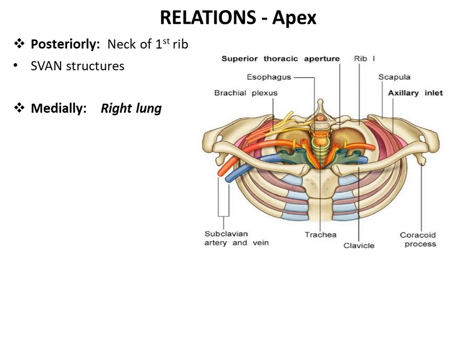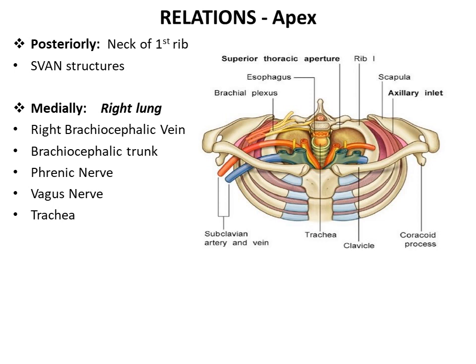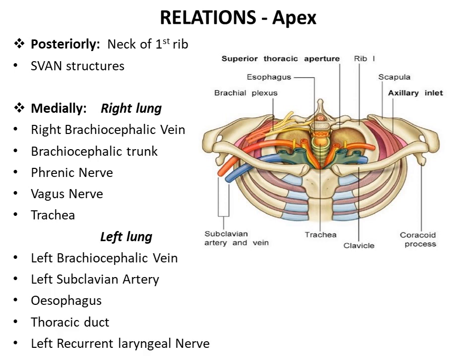Medially, the structures vary on both sides. The right lung is medially related to two vessels — right brachiocephalic vein and brachiocephalic trunk; two nerves — phrenic and vagus; and one viscera, i.e. trachea. The left lung is medially related to two vessels — left brachiocephalic vein and left subclavian artery; two viscera — esophagus and thoracic duct; and one nerve, i.e. left recurrent laryngeal nerve.